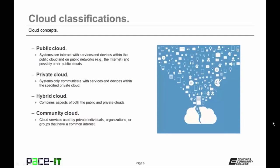There is the public cloud, where systems can interact with services and devices within the public cloud and on public networks like the internet. Amazon's AWS is an example of a public cloud. Then there are private clouds, where systems only communicate with services and devices within the specified private cloud, and are not open for general public purchase. Then there are hybrid clouds, which combine aspects of both public and private clouds. Finally, there is the community cloud classification, where cloud services are used by private individuals, organizations, or groups that have a common interest, and the community is responsible for what occurs within that cloud.